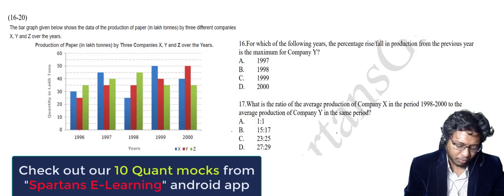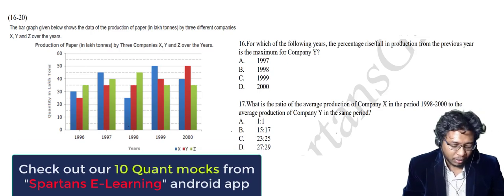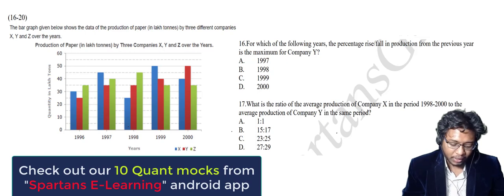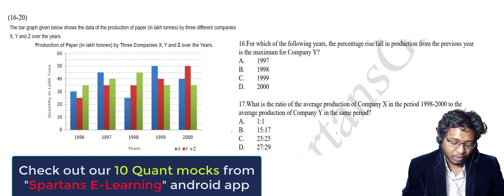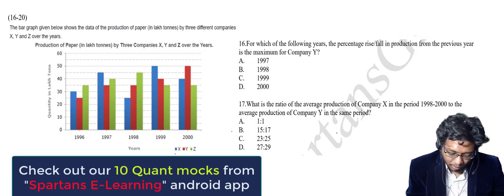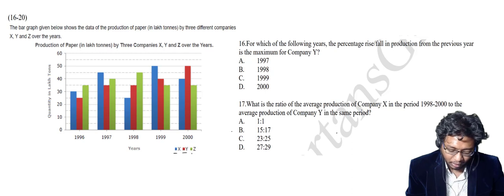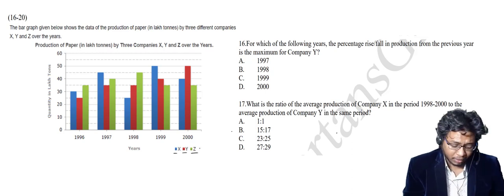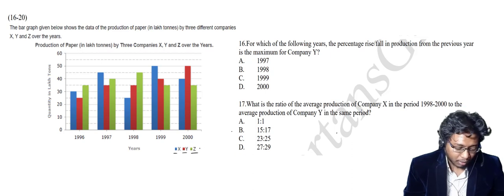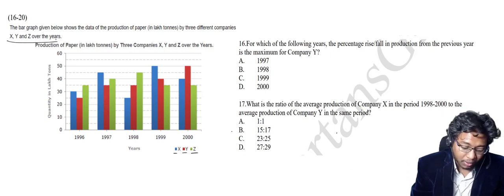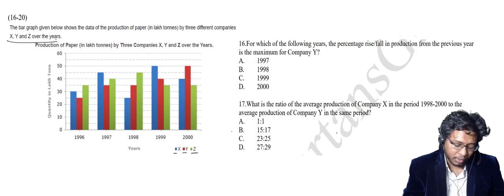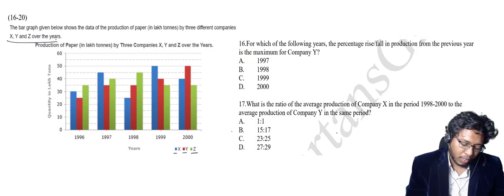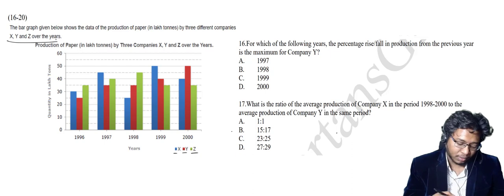First of all, read the information properly. The bar graph given below shows the data of the production of paper in lakhs of tons by three different companies X, Y, Z. X is indicated in blue, Y is indicated in red, and Z is indicated in green. These are over the years — years are given from 1996 to 2000, and on the Y-axis the values in lakhs of tons are given.